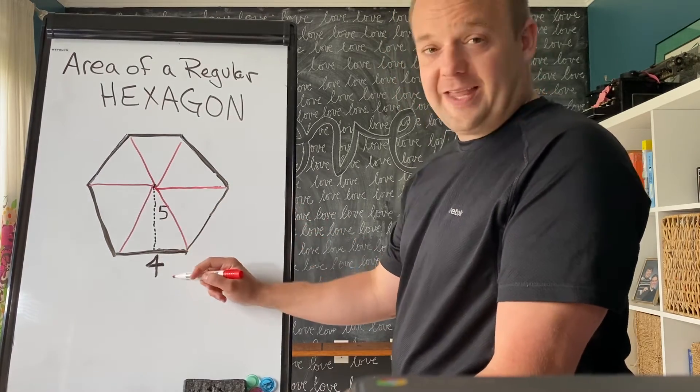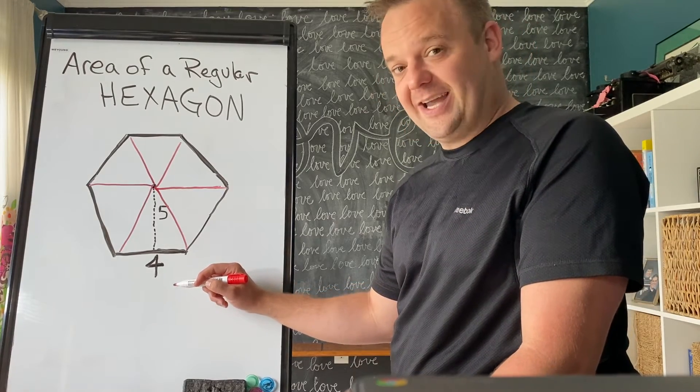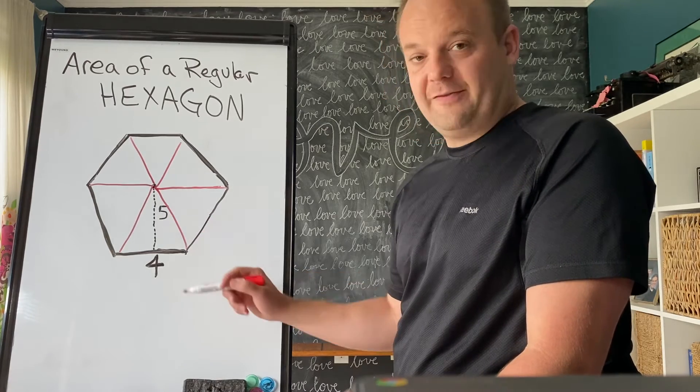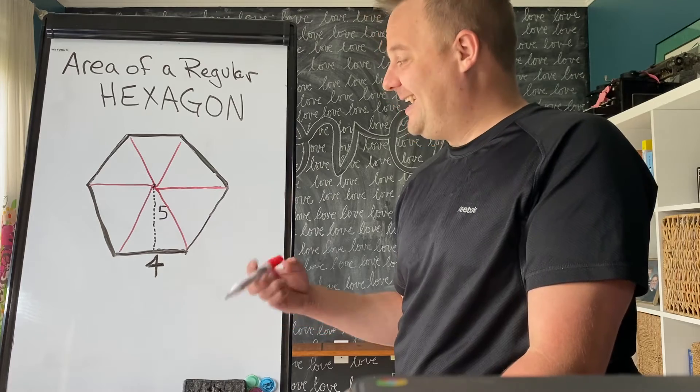So let's find the area of this triangle. The area of a triangle is one-half the base times the height, or base times height divided by 2. So 4 times 5 is 20. Divided by 2, or multiplied by one-half, is 10.